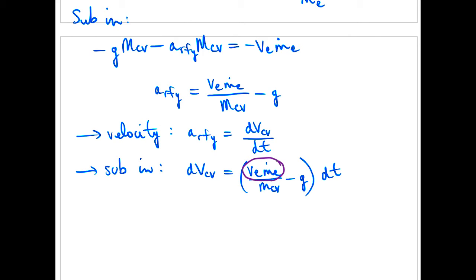But mcv, the total mass of the control volume. Well, we're told we're burning this fuel. This fuel's exiting out the back. So we definitely have the mass of our control volume changing with time.